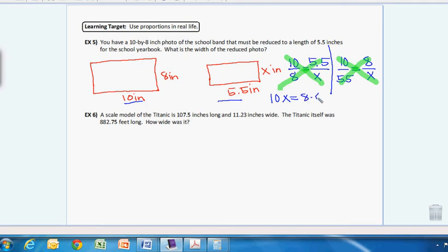So 10X equals 8 times 5.5, which is 10X equals 44. And if we divide both sides by 10, X equals 4.4 inches.